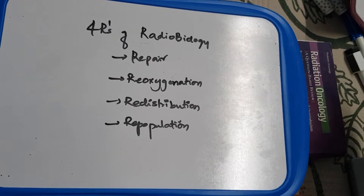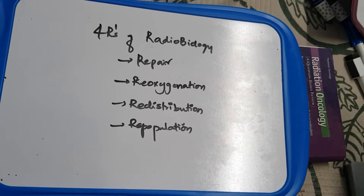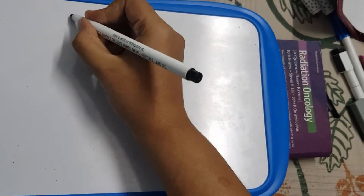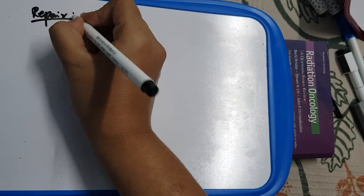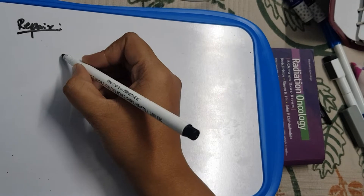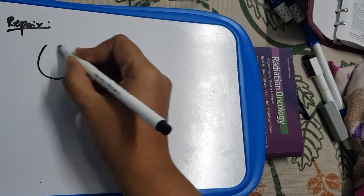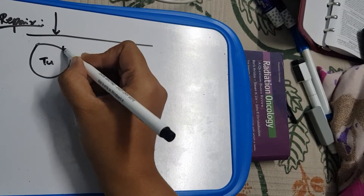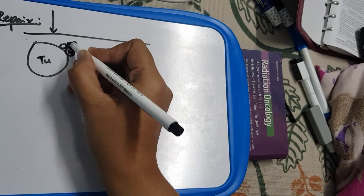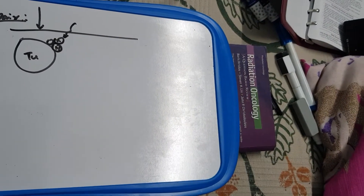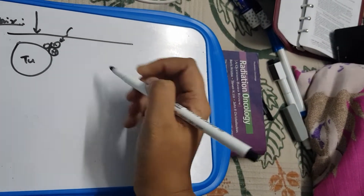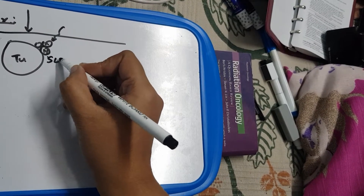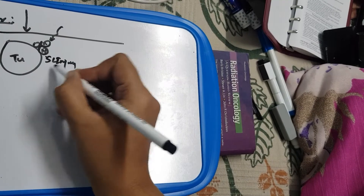The four Rs of radiobiology are repair, reoxygenation, redistribution, and repopulation. Let's learn about each of them. Starting with repair — when we give radiation, apart from tumor cells, normal cells which are present in the field also receive sparse radiation, and they will also experience some of the radiation.